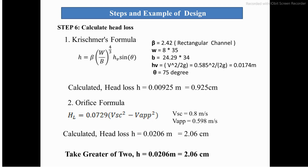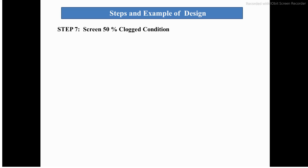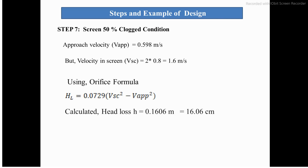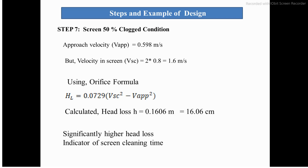We take the greater head loss of the two, which is 2.06 cm. In step 7, we calculate the screen head loss under 50% clogged conditions. The approach velocity is 0.598 m/s, but the velocity through the screen will be double — 1.6 m/s — because 50% of the screen is blocked. Using the orifice formula, the head loss is 16.06 cm.